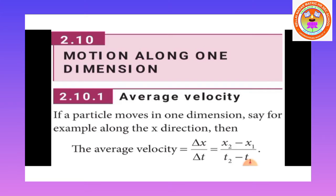The first topic is average velocity. If a particle moves in one dimension, say for example along the x direction, we are going to calculate the average velocity of the particle. As discussed in the last video, the average velocity is defined as the ratio of the displacement vector to the corresponding time interval. For one-dimensional motion, it is written as Δx divided by Δt, where Δx means the displacement vector — the displacement along the x axis.